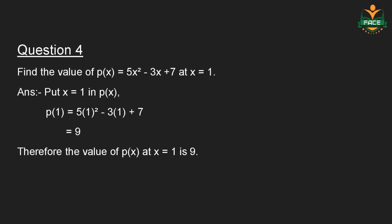Question number 4: Find the value of P(x) is equal to 5x squared minus 3x plus 7 at x equal to 1. Put x equal to 1 in P(x). Therefore, P(1) is equal to 5 into 1 squared minus 3 into 1 plus 7. The answer is 9. Therefore, the value of P(x) at x equal to 1 is 9.